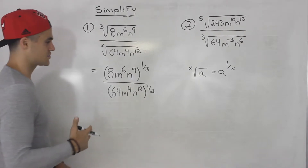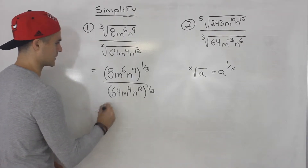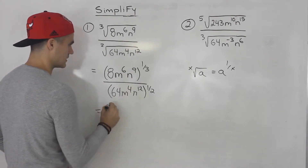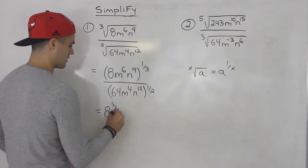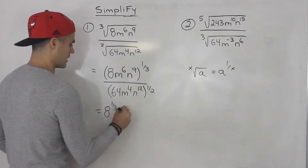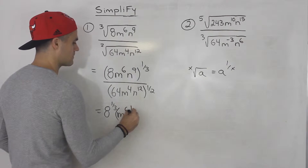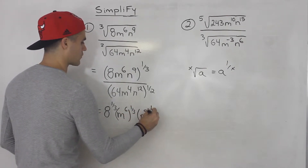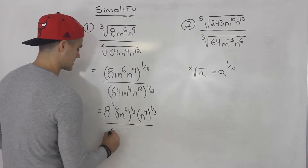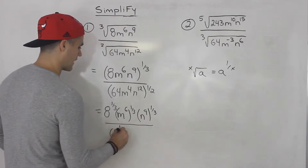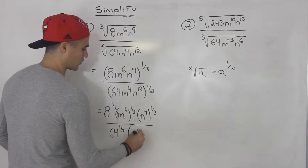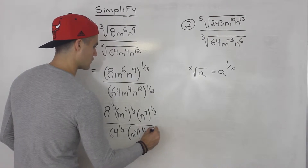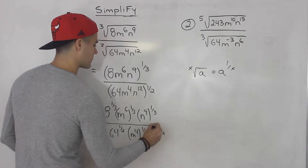From here it's just the same as we've been doing. I'm going to distribute it inside the bracket, so I'll have 8 to the power of 1 over 3, m to the 6 to the power of 1 over 3, and then n to the 9 to the power of 1 over 3. All over 64 to the power of 1 half, m to the 4 to the power of 1 half, and then n to the 12 to the power of 1 half as well.